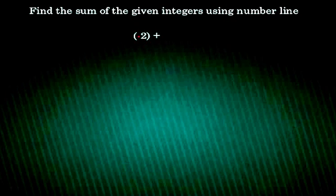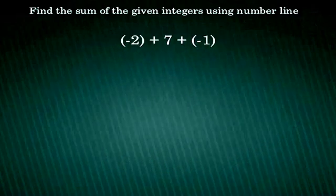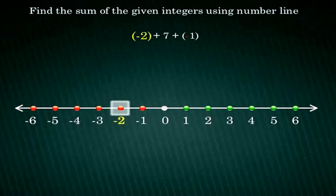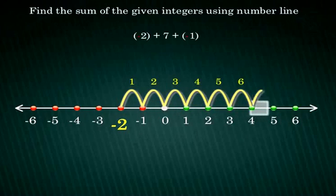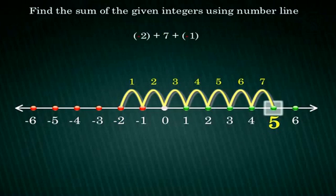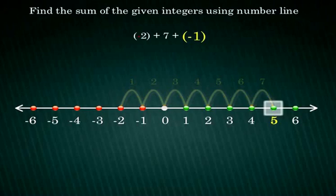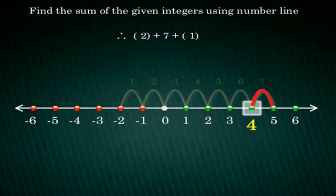Find the sum of the given integers using number line. Negative 2 plus 7 plus negative 1. Notice that we are now adding 3 integers instead of 2. Draw a number line and mark negative 2 on it. That is the starting point. Starting from negative 2, move 7 units towards the right as the next number is positive 7. We have reached positive 5. The next number is negative 1. So, from 5 move one unit towards left. We have reached positive 4. Therefore, negative 2 plus 7 plus negative 1 is equal to positive 4.